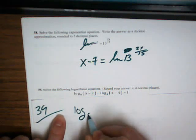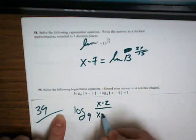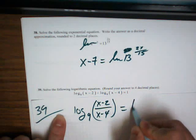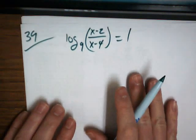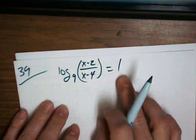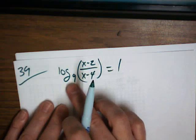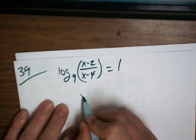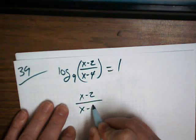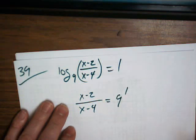So log base 9 of (x minus 2) over (x minus 4) equals 1. Remember how these logarithms work. 9 to the first power equals this right here. So this is equal to 9 to the first power, which is just 9.